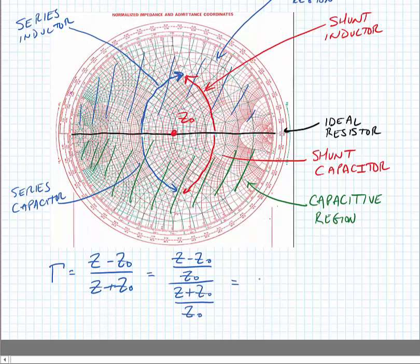And we would come up with our normalized reflection coefficient lowercase z minus 1 over lowercase z plus 1.